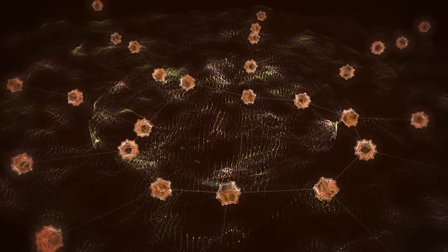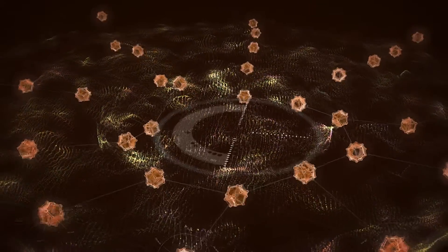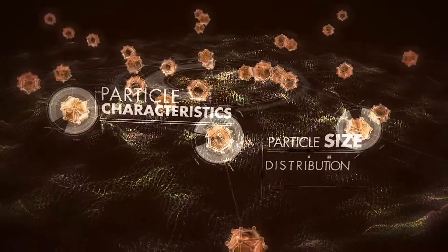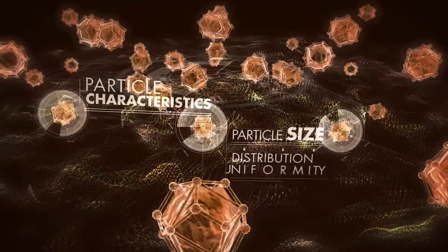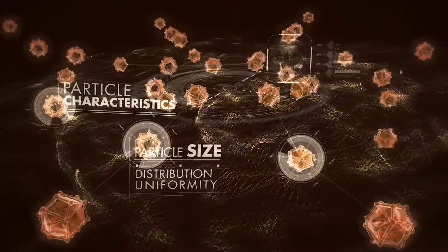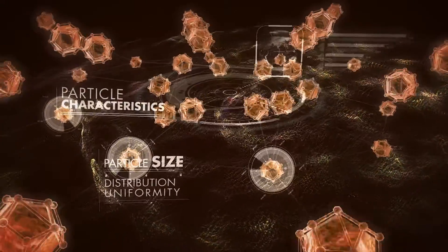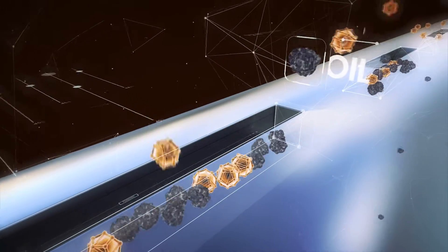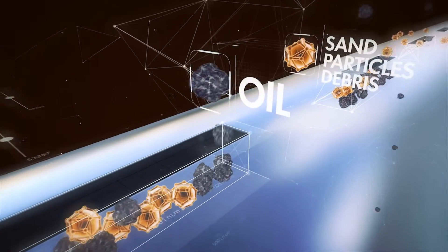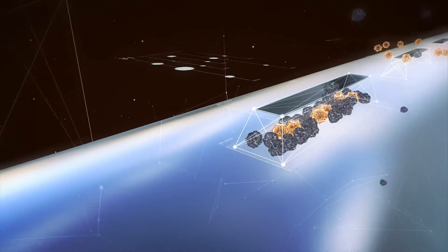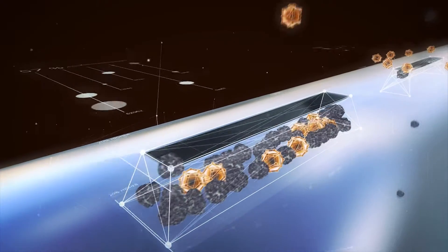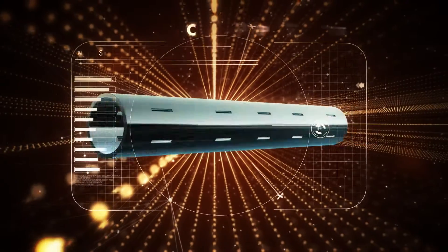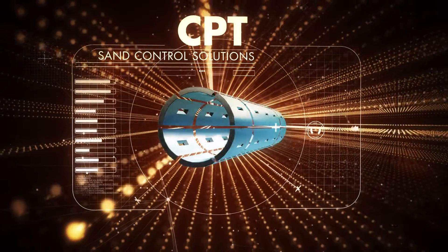Knowledge of reservoir sand properties — such as particle characteristics, particle size distribution, and particle size uniformity — is central to the design of sand control completions and can improve production levels. This means that the choice of sand control solution can have a major impact on the productivity and efficiency of a producing well.